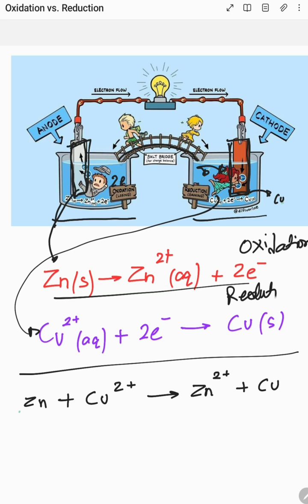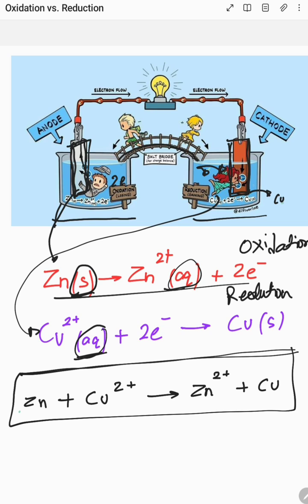The overall reaction of the Daniel cell is given by this equation. The notation s denotes solid, so this is the metal, and aq denotes the ions and electrolyte which are in the aqueous form.